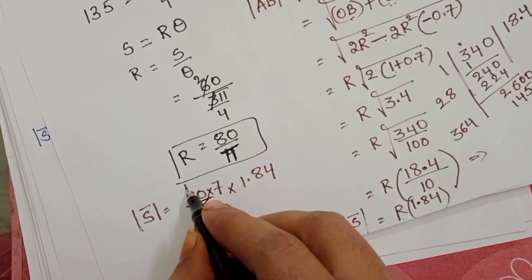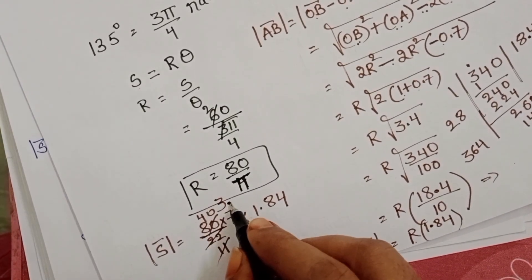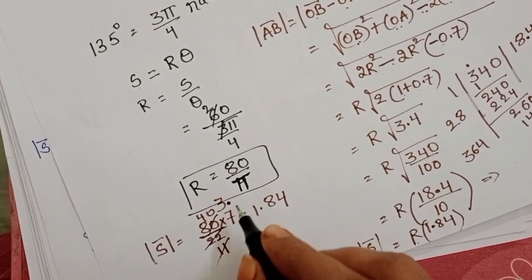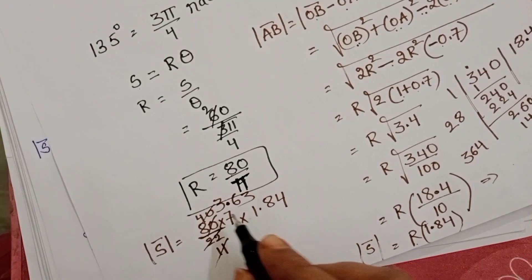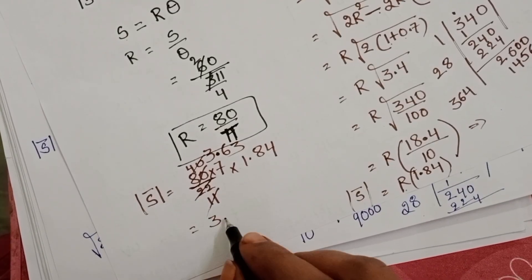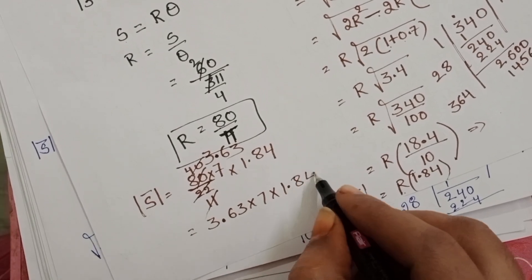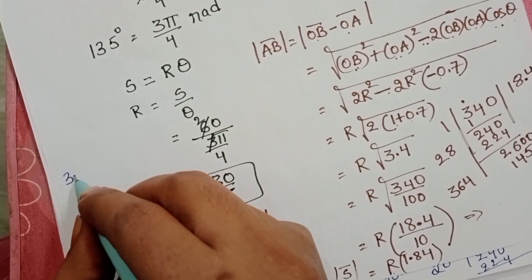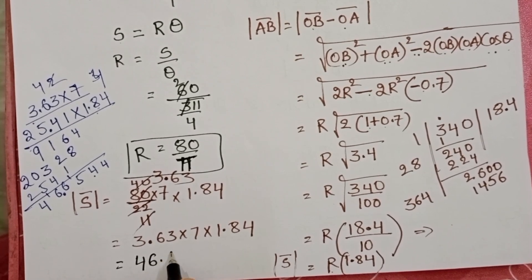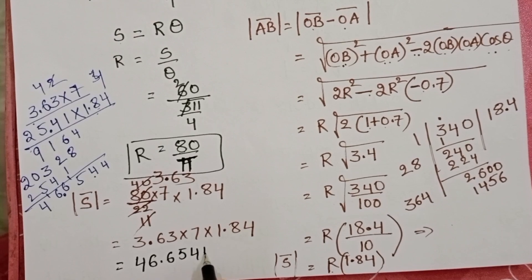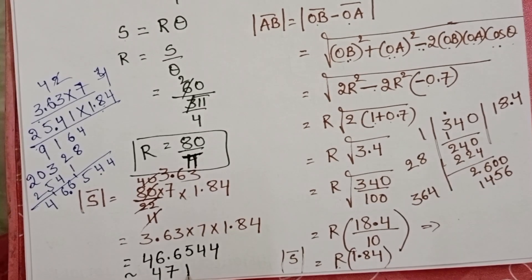Performing the arithmetic: 80 × 7/22 = 560/22 ≈ 3.636. Then 3.636 × 7 × 1.84 ≈ 46.6544. This is approximately equal to 47 meters.